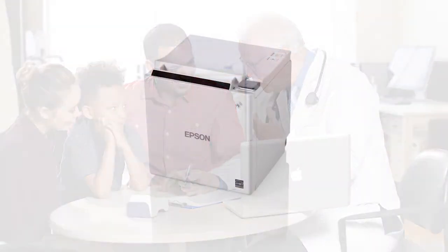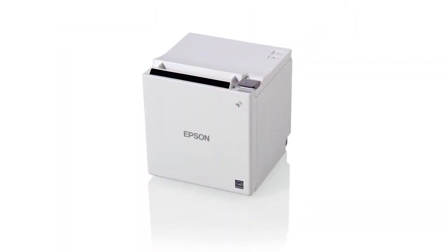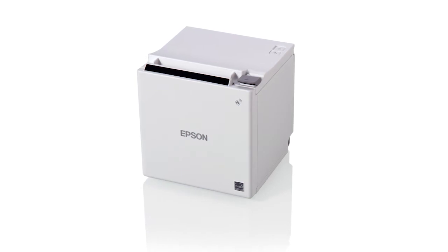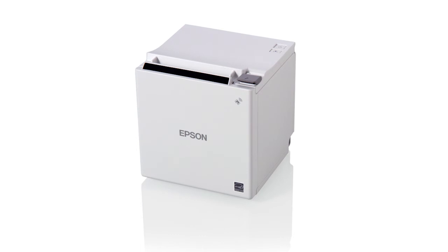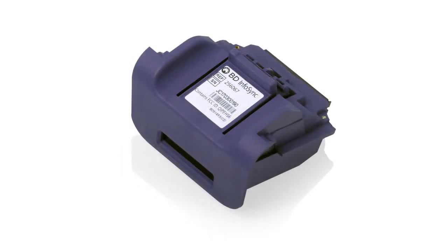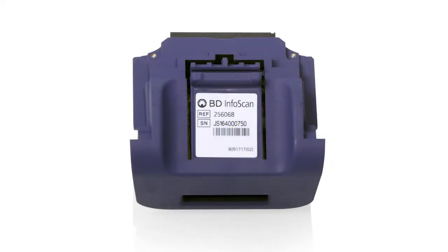The BD Veritor Plus analyzer also has the capability to connect to a printer to print test results instantly for record keeping. A small and portable printer along with a dedicated USB cable is required at an additional cost. The BD Veritor InfoScan, a barcode scanning module, and BD Veritor InfoSync, a scanner and connectivity module, accessories are available to add data traceability and LIS connectivity capabilities to the BD Veritor Analyzer.